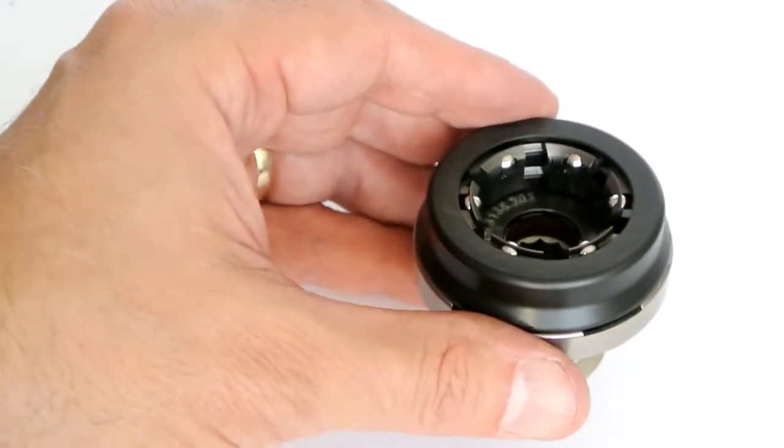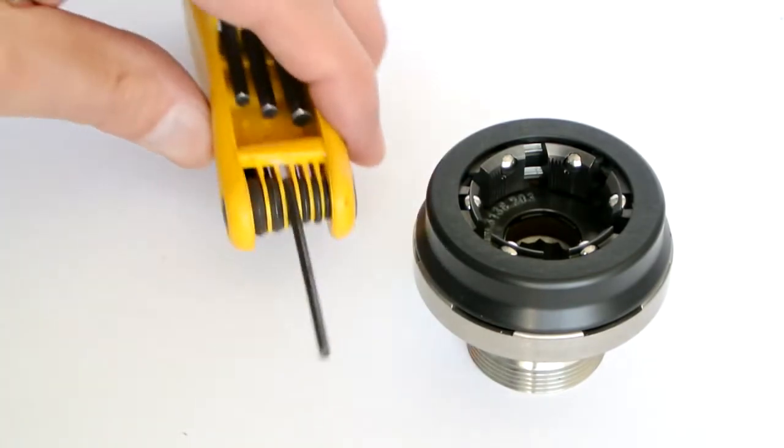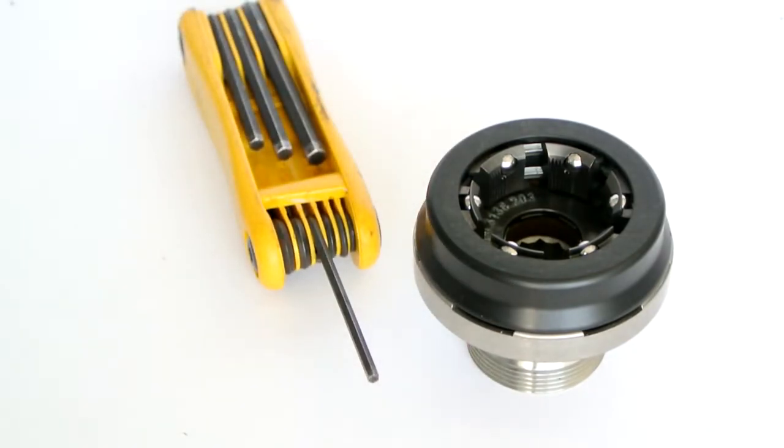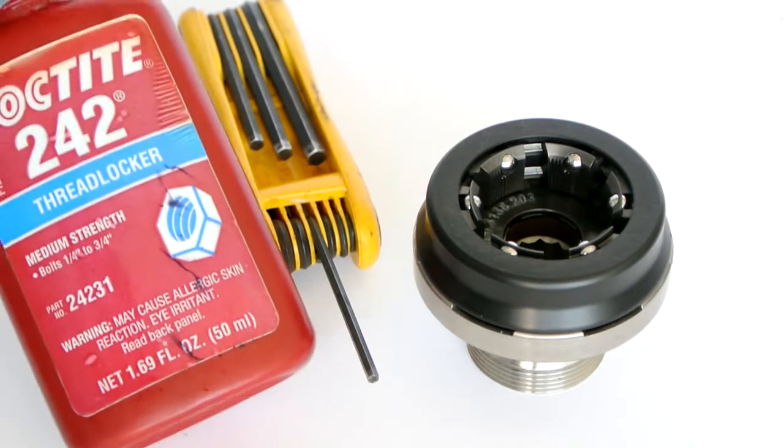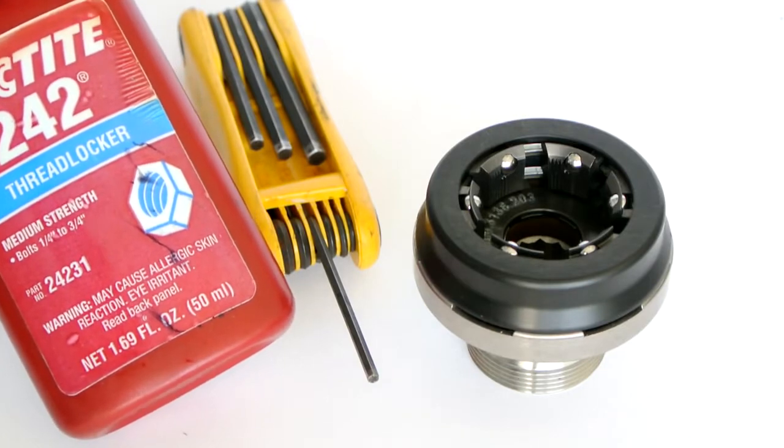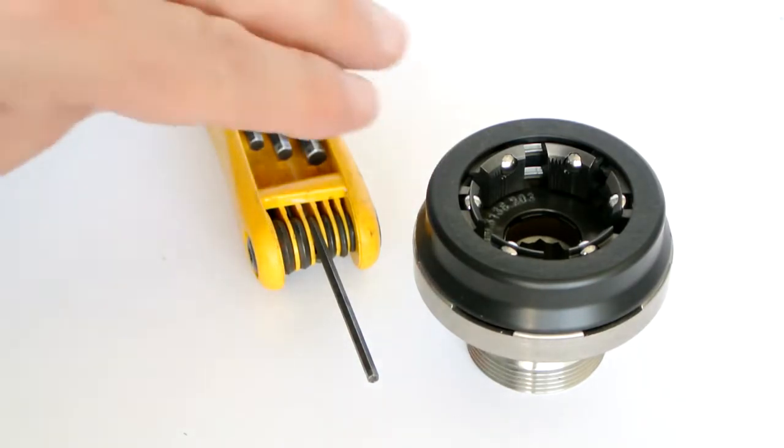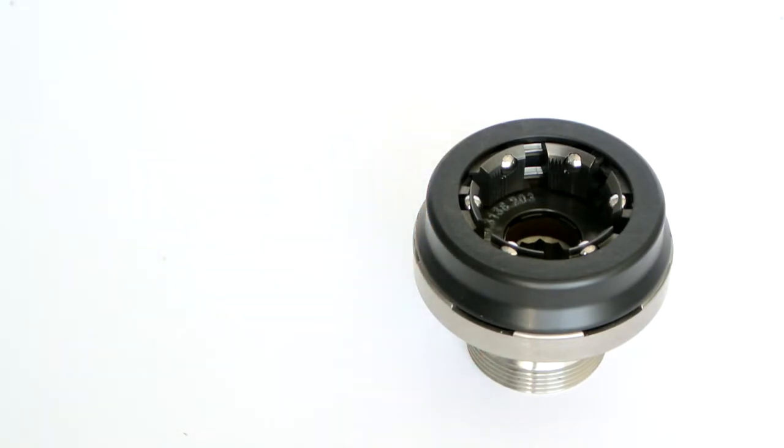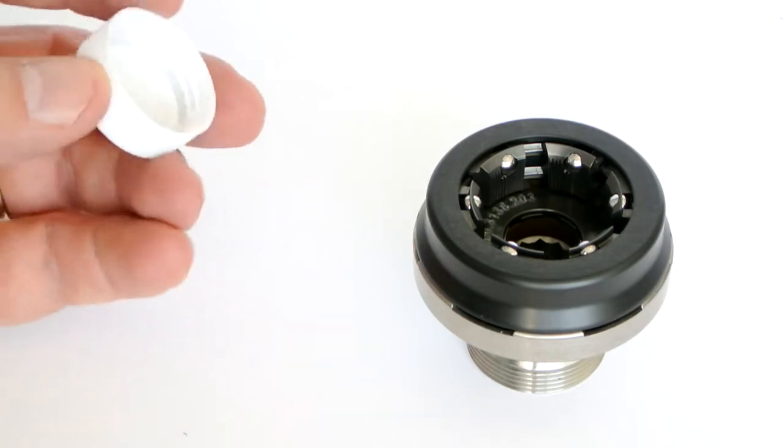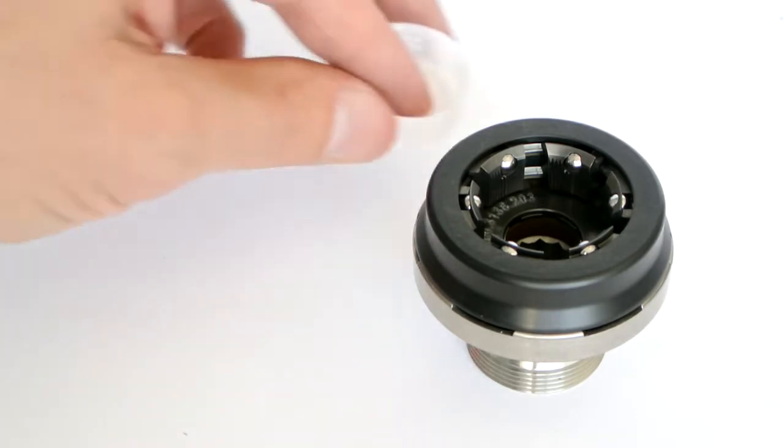You will only need one tool for this conversion, a 2.5 mm Allen wrench. A 3.32 wrench can also be used if 2.5 mm isn't available. You will also need blue Loctite 242. The detent balls come out of the chuck, so you'll want to have something on hand to hold the balls. A bottle cap works fine for that.